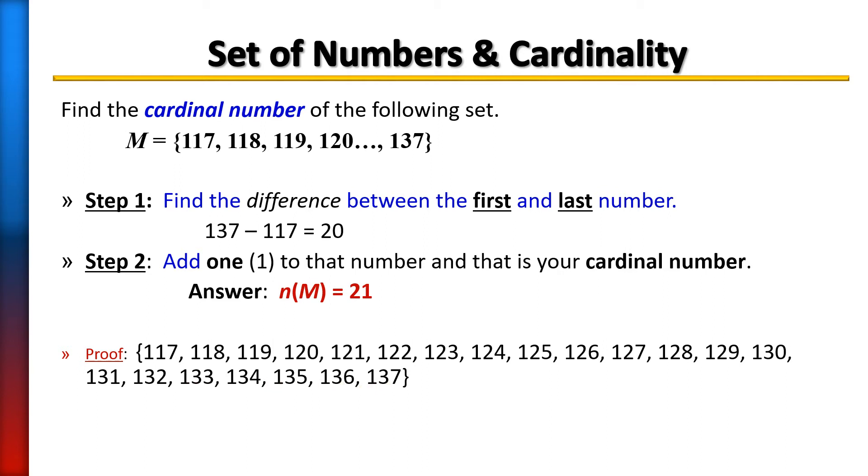So you notice it is true that set M does contain 21 members. So just a recap: take the first and the last number, subtract them, and then add one for the cardinal number of a set.